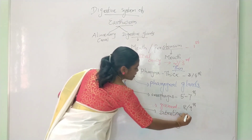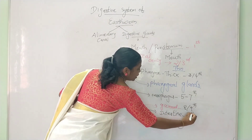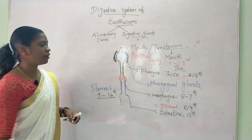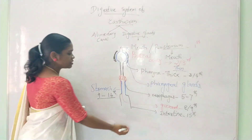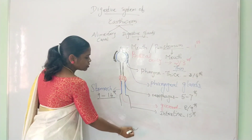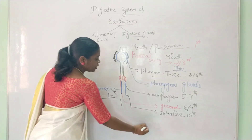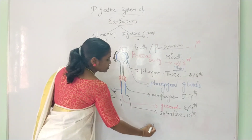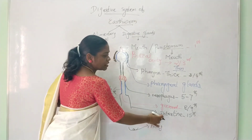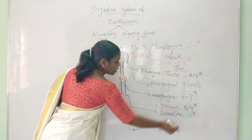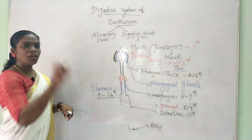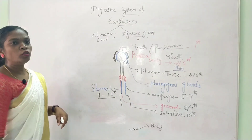The intestine begins at the 15th segment and extends to the last segment. The last segment contains the anus. The intestine runs from the 15th segment all the way to the anus.